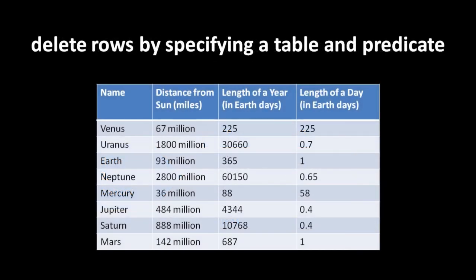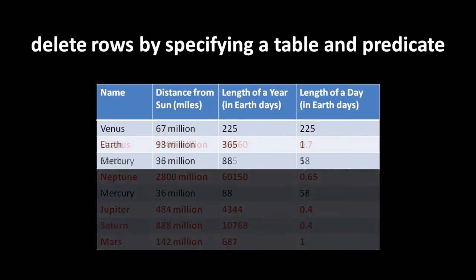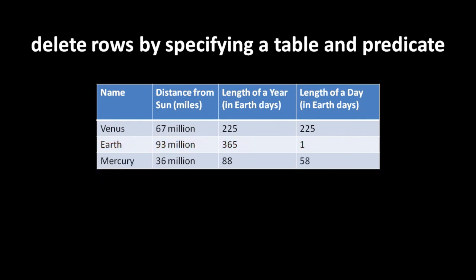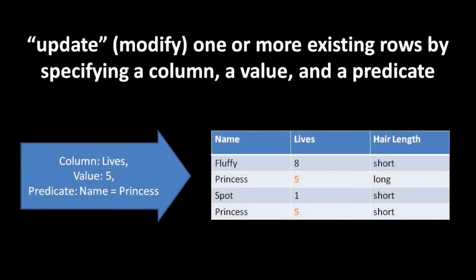When it comes to removing rows from a table - deleting them - we specify a predicate to filter rows and then delete them. In our planets table, if we delete rows by specifying a predicate of distance from sun greater than 100 million miles, that effectively selects Uranus, Neptune, Jupiter, Saturn, and Mars, and deletes them. If we want to change data in existing rows, this is called an update operation - we specify which rows to update with a predicate, and which column or columns to update with new values.